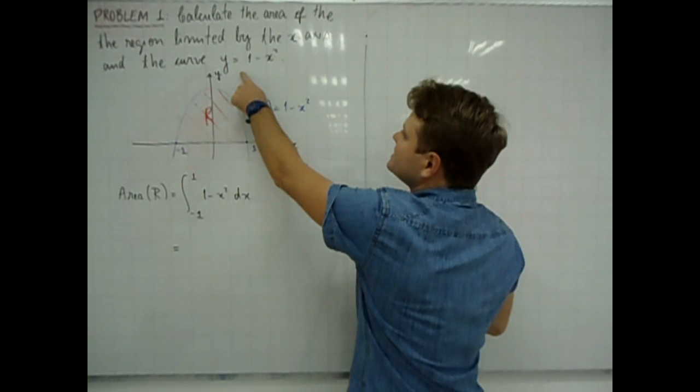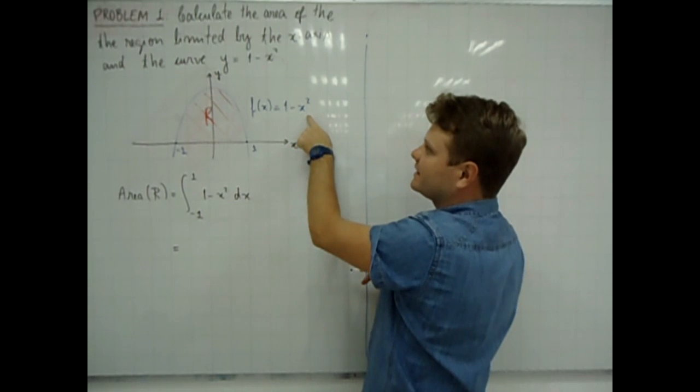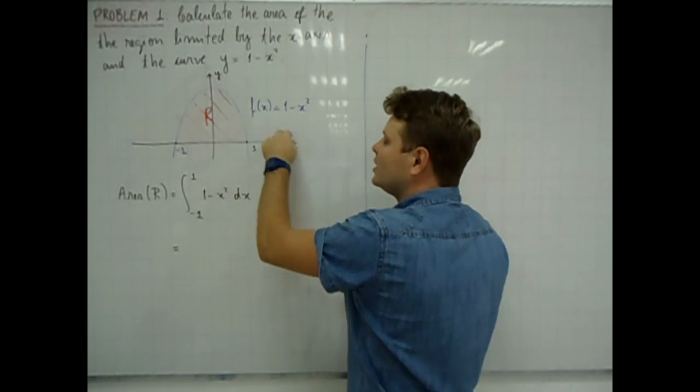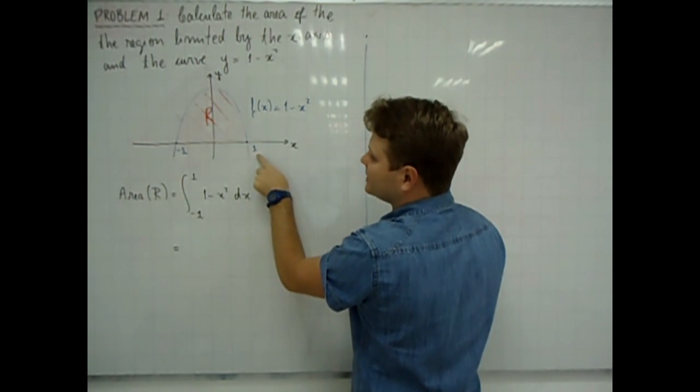This curve can be seen as the graph of a quadratic function F, so that F of x is equal to 1 minus x squared. Here it is easy to see that the graph of F crosses the x-axis at x equal to minus 1 and x equal to 1.